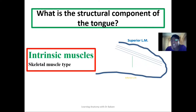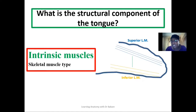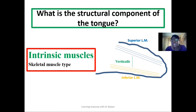Then you have the inferior longitudinal muscle, which means that it is inferiorly placed but longitudinal. This is the part by which they also run. Then we have the verticalis, which runs from the superior region of the tongue down to the inferior region of the tongue, running superiorly to inferiorly.